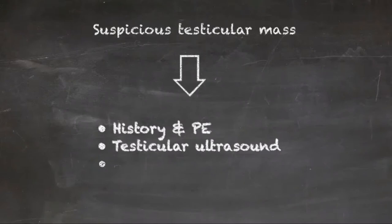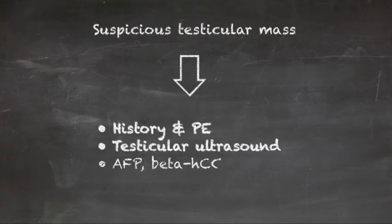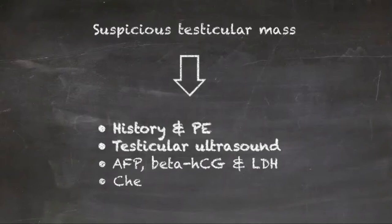Serum tumor markers both before and 5 to 7 days after orchiectomy — AFP, HCG, and LDH — the latter is mandatory in advanced tumors. Patients with normal serum tumor markers, HCG and AFP, and indeterminate findings on physical exam or testicular ultrasound for testicular neoplasm should undergo repeat imaging in 6 to 8 weeks.